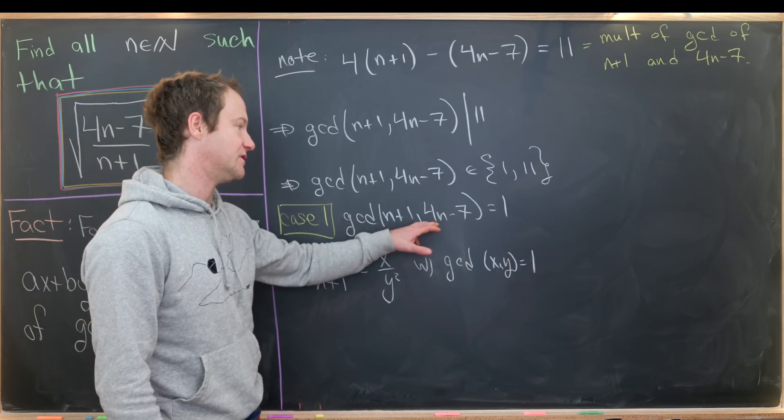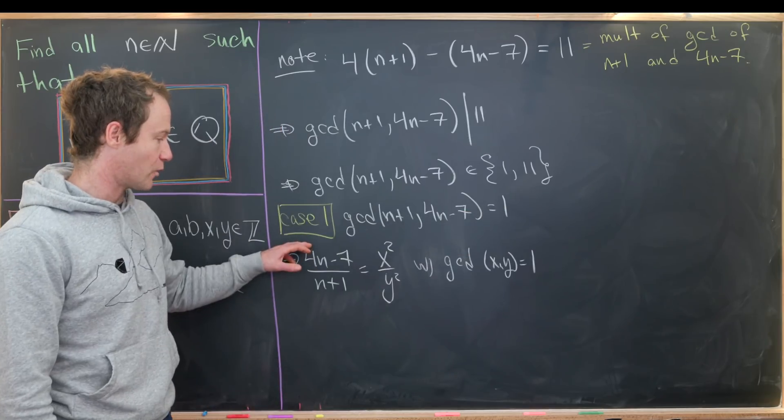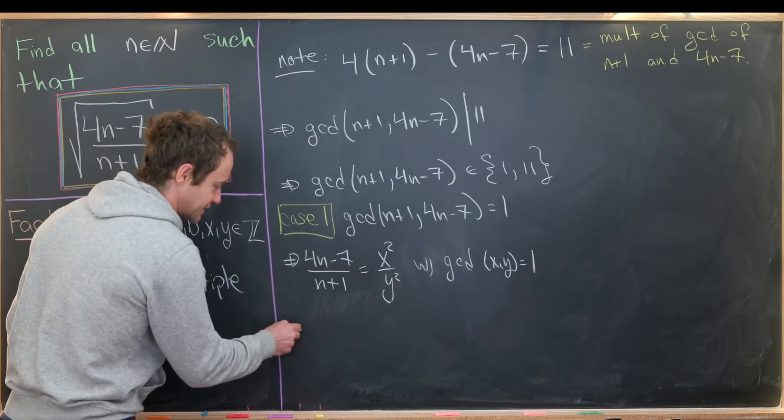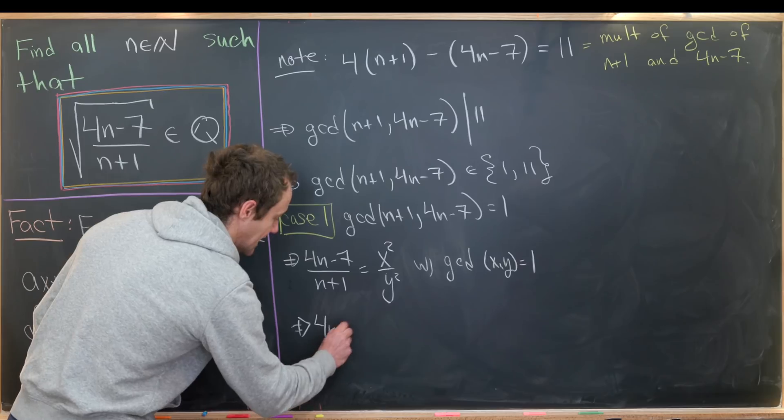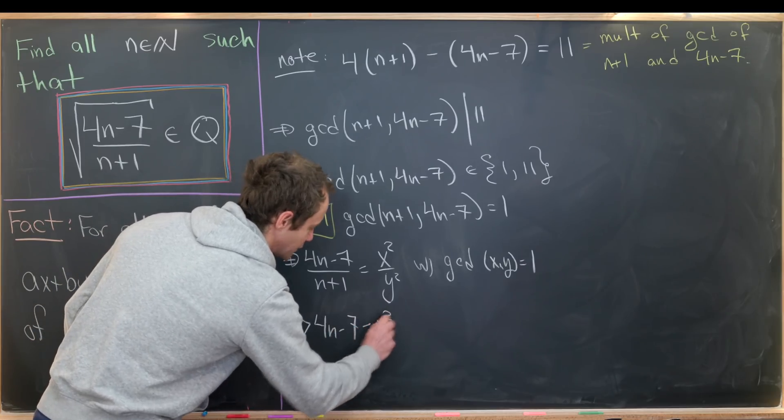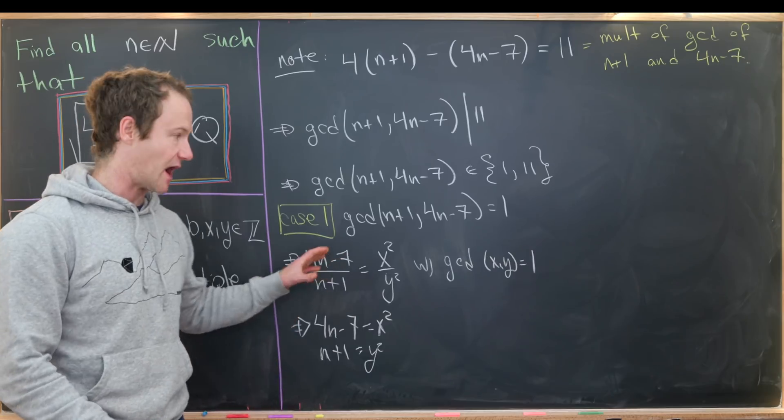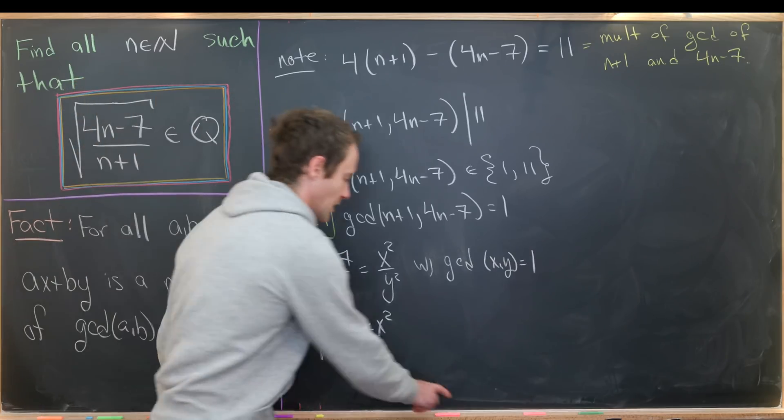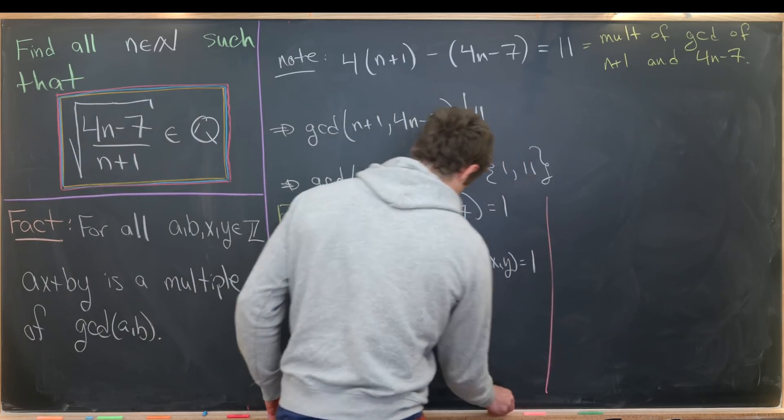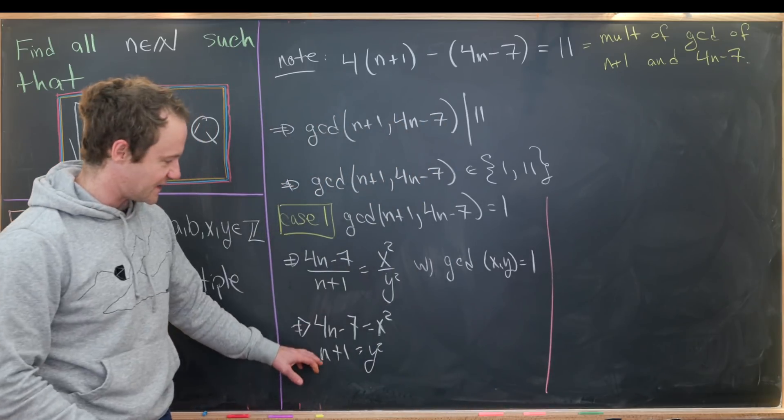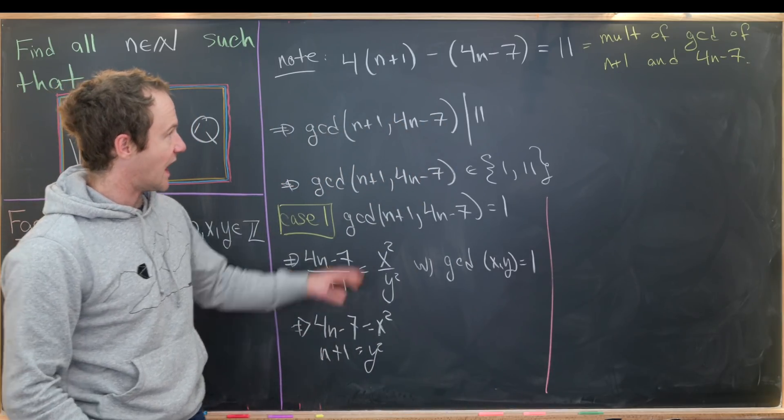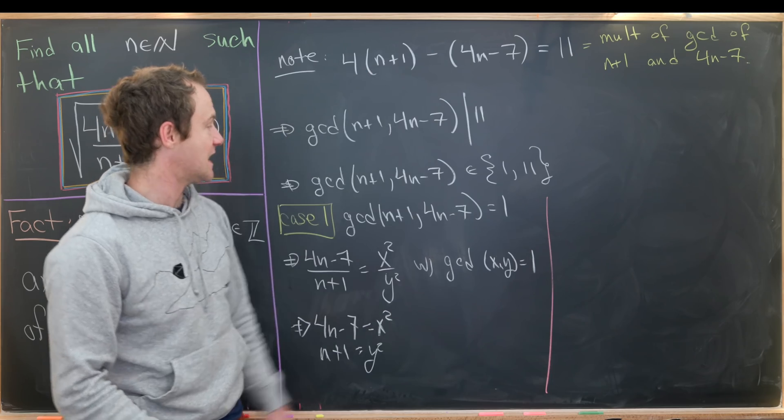Actually, we can write this without using the fact that the gcd of these two numbers is 1, but now we can use the fact that the gcd of these two numbers is 1 to set 4n-7 = x² and n+1 = y². That's because there's nothing to cancel out on either side of this equation. Okay, so let's see what that gives us. We'll take these two equations and plug them back up here and see what we have.